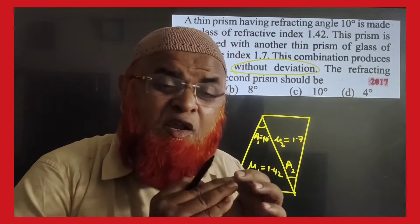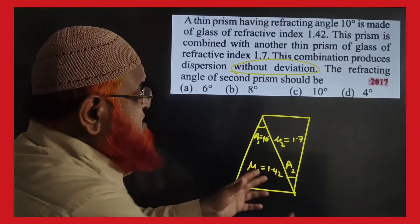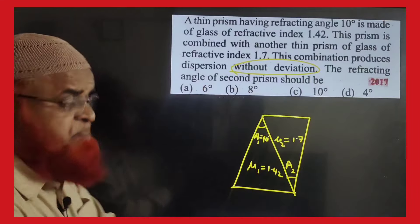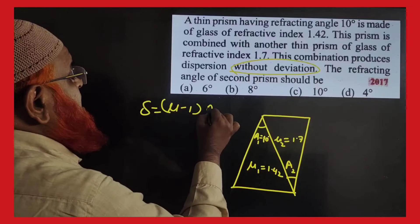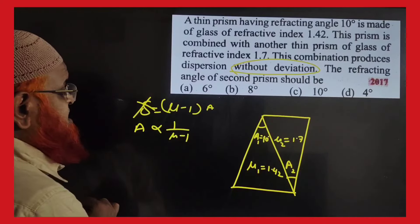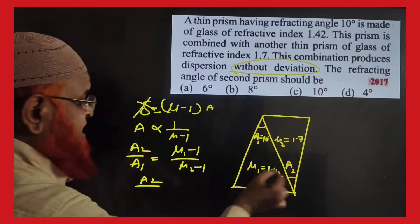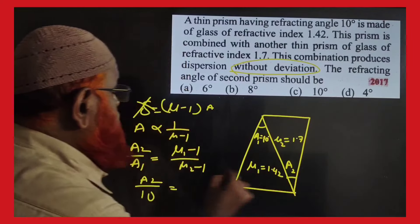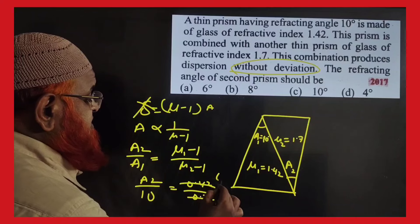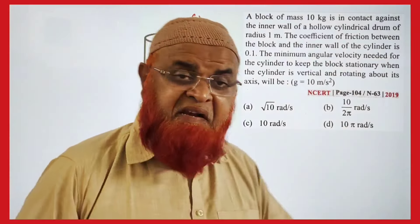Here is a wonderful shortcut for two thin prisms with angle A1 = 10°. Since there is no deviation, angle is inversely proportional to (mu − 1), so A2/A1 = (mu1 − 1)/(mu2 − 1). With mu1 = 1.42 and mu2 = 1.7: A2 = 10 × 0.42/0.7 = 6 degrees.